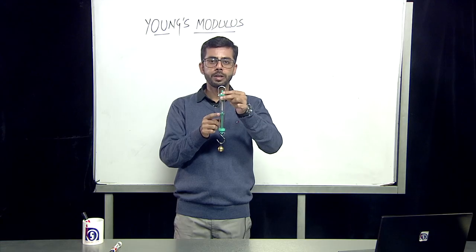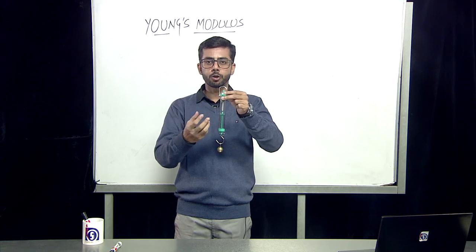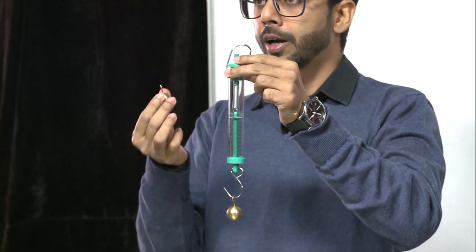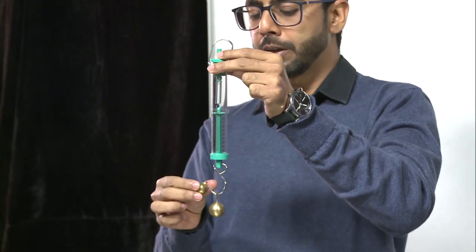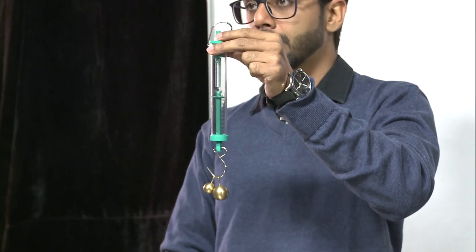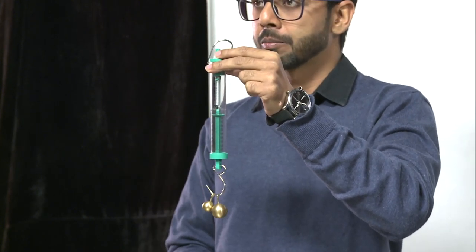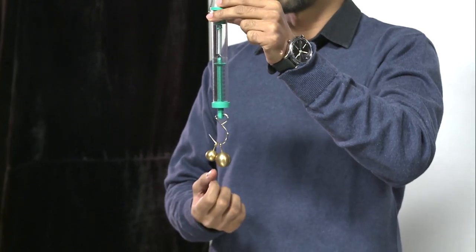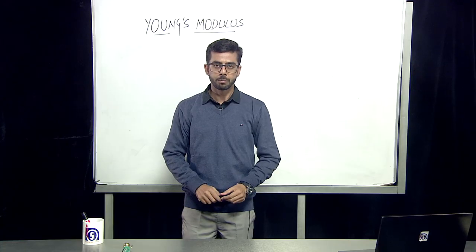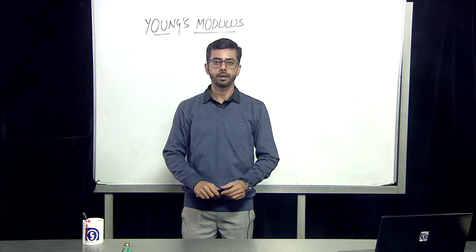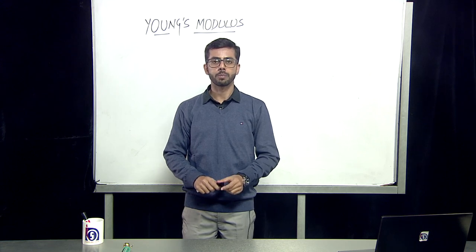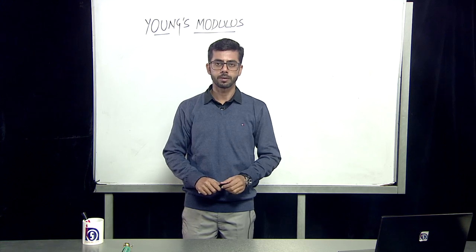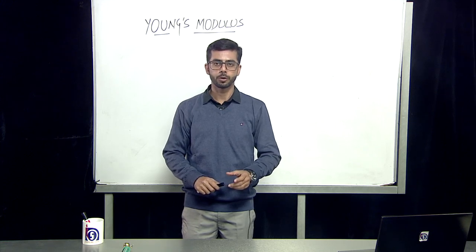Now we try to increase the amount of weight by implying another bob with a different weight. When we apply this weight, the amount of stretch increases — the more the weight, the more will be the stretch. With this example, we can say that when a thin wire is loaded with a weight, there will be a stretch, and that stretch is directly proportional to the weight applied.